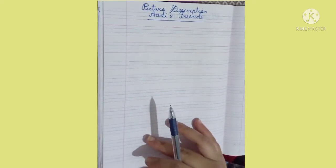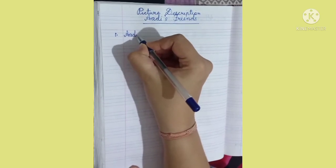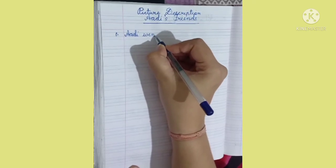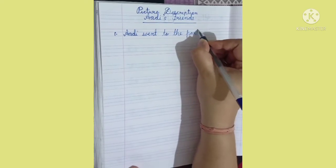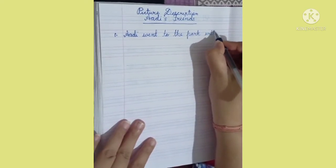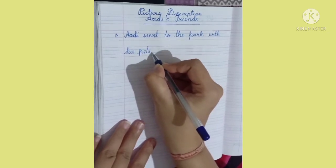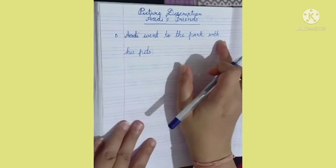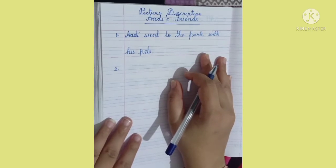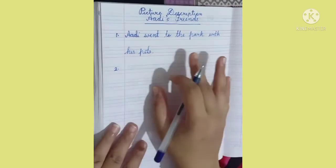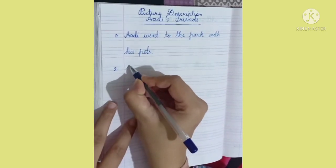The first point we are going to write: Adi went to the park with his pets. Next, number two — what else did you see in the picture? You saw the dog, and it was playing with the ball. We are also going to give the dog a name. Suppose we call the dog Goofy.